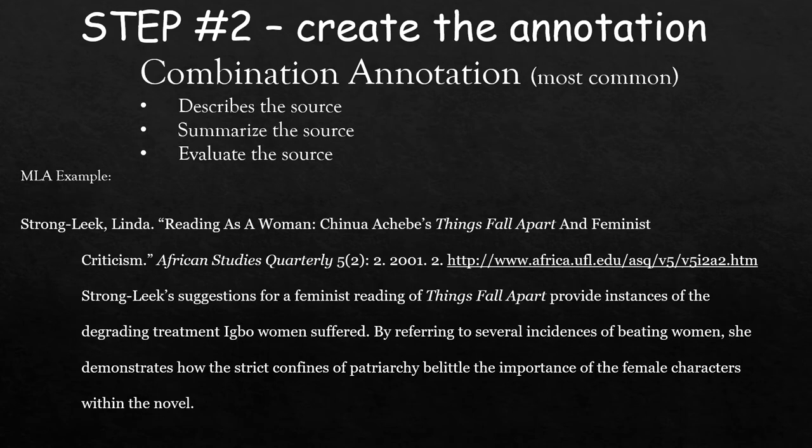Finally, throw all three types of annotations in the mix and you have a combination annotation, which is most commonly used. A combination annotation describes, summarizes, and evaluates the source. This MLA example manages to do all three. The author explains the scope of the work and offers a summation of the work's purpose, stating that Strong Leak shows how patriarchy can belittle the novel's female characters' importance.